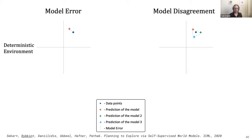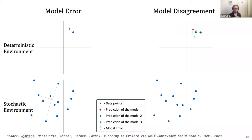However, if your environment is noisy with multiple possible future observations, a deterministic model will converge to the mean prediction and still have very high model error even on already-seen data. In contrast, an ensemble's models will all converge to the mean, and the disagreement will be low for seen data. Model error conflates the intrinsic uncertainty of the environment with uncertainty about model parameters, while model disagreement only captures uncertainty about model parameters. We formally show that ensemble disagreement approximates the information gained by our agent about the environment.